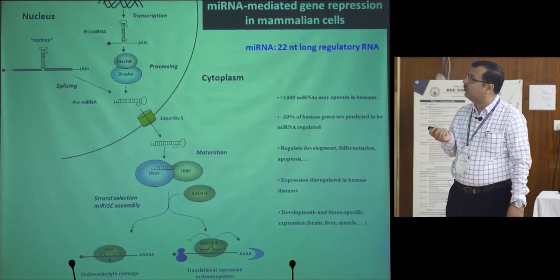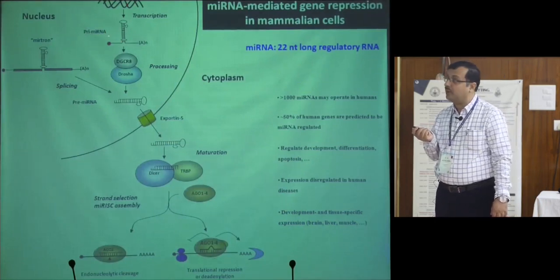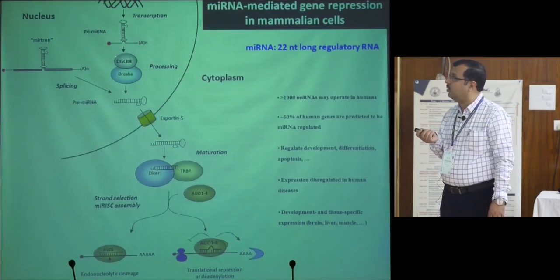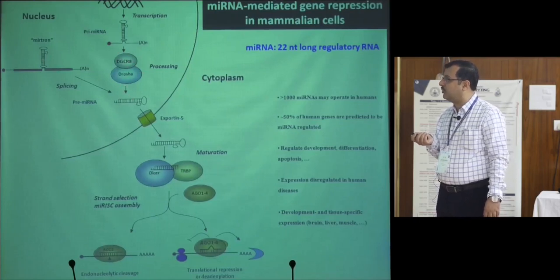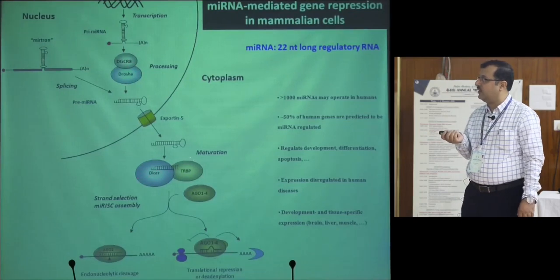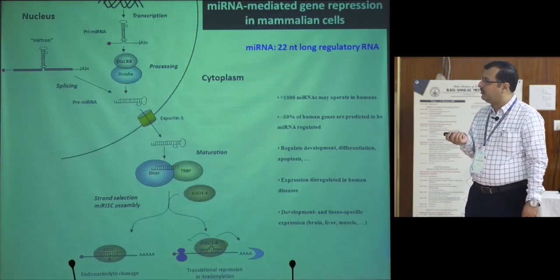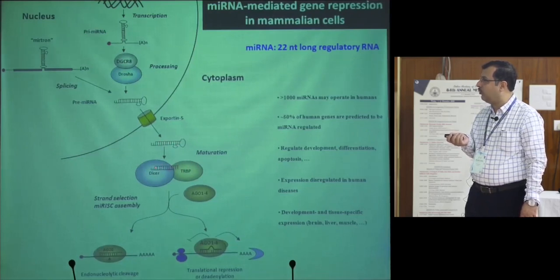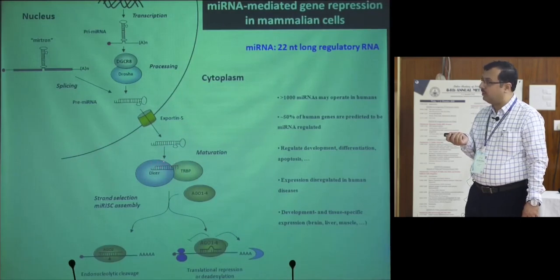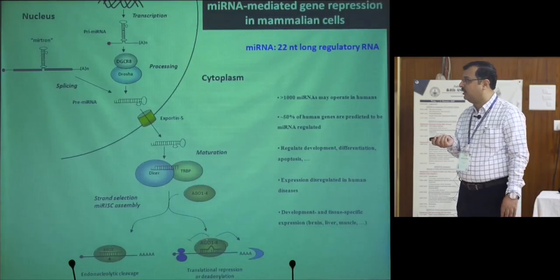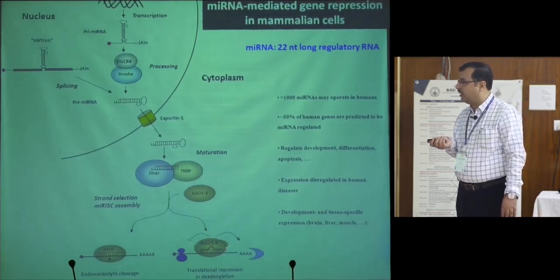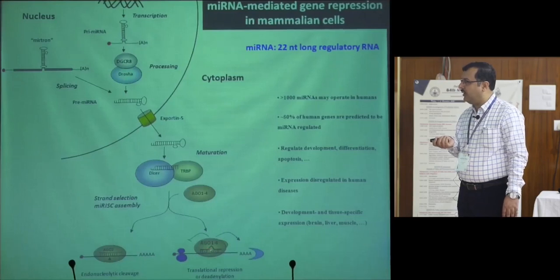MicroRNA is transcribed as primary microRNA, processed by the enzyme complex DGCR8/Drosha in the nucleus into pre-microRNA, which gets exported into the cytoplasm and matured there by Dicer and TRBP. This Dicer-TRBP complex acts on the precursor form and processes it into a double-stranded form, and one strand of 22 nucleotides including the microRNA gets incorporated into the Argonaute proteins. This Argonaute-microRNA complex then finds target genes and binds them with perfect or imperfect complementarity, inducing translational repression and degradation of the mRNA.